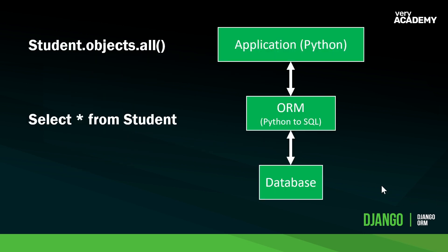A Django application is written in Python. So in Django, if we wanted to collect data from the database, send data to a database, or change the database schema, we would do that using Python. For example, here we have the statement student.objects.all. To break this down: student is the name of the table, objects is the manager — a Django class that provides an interface between database query operations and the Django model — and all is the instruction.